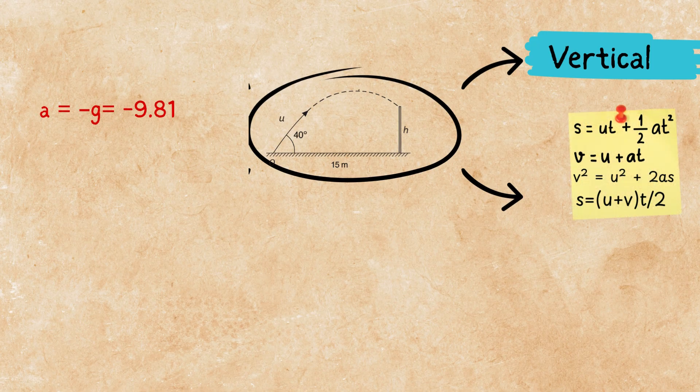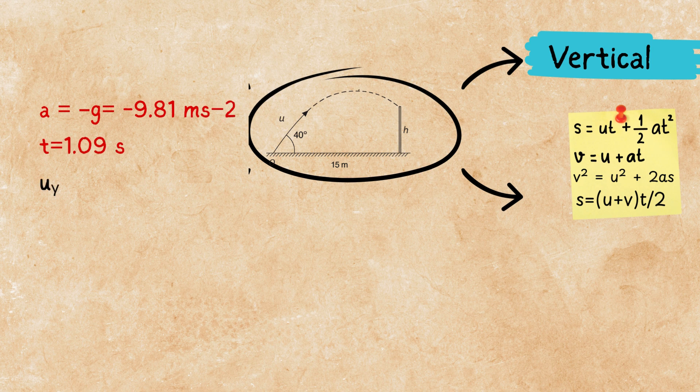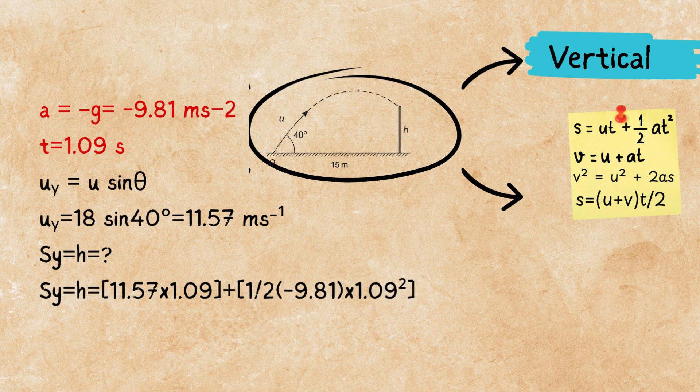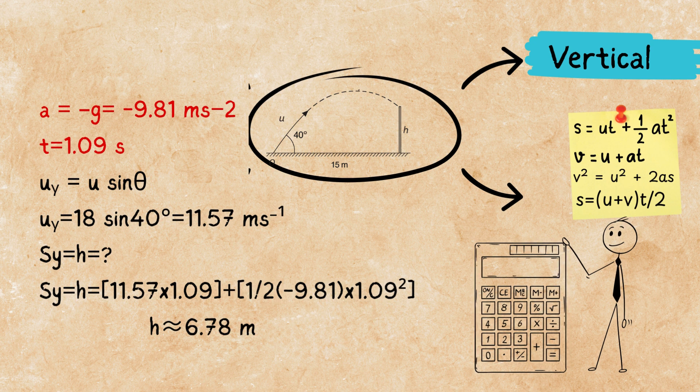Now, for part B, they want the height of the wall. We have to go to the vertical equations. Height of the wall is vertical. We have the initial velocity U sine theta. Now, we can use the time that we had it before. So, what do we have? We know the acceleration of gravity is 9.81 meters per second squared, but downward. So, we have to put negative now.